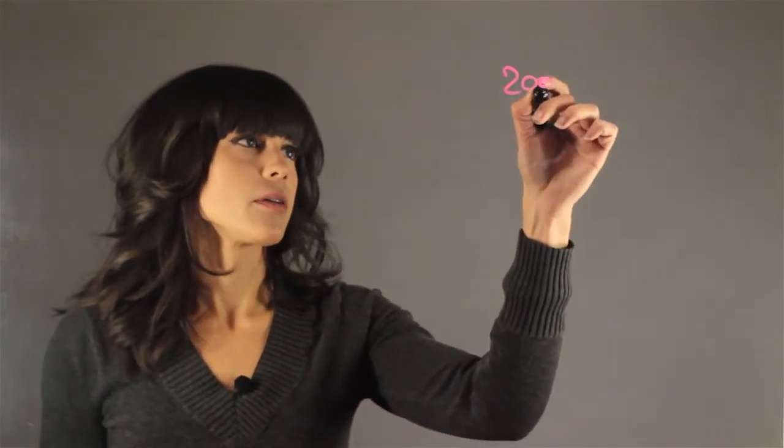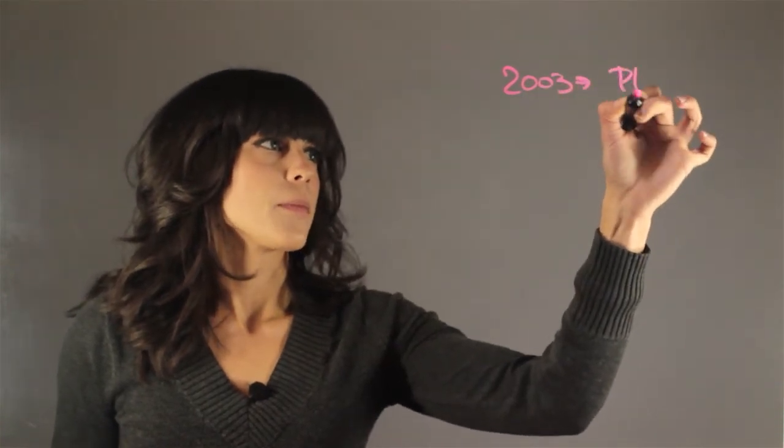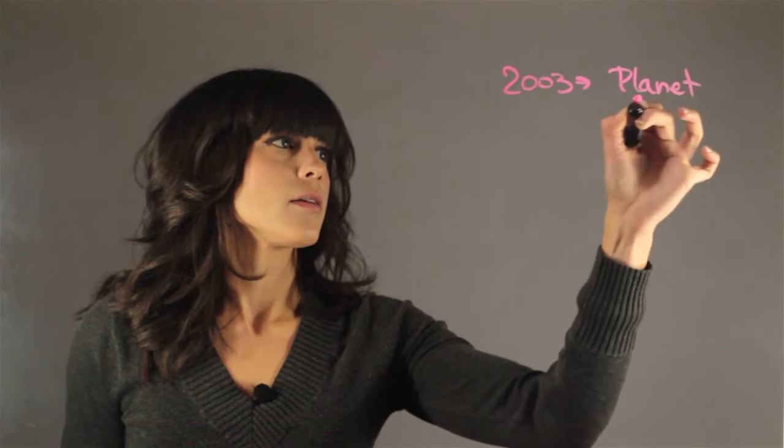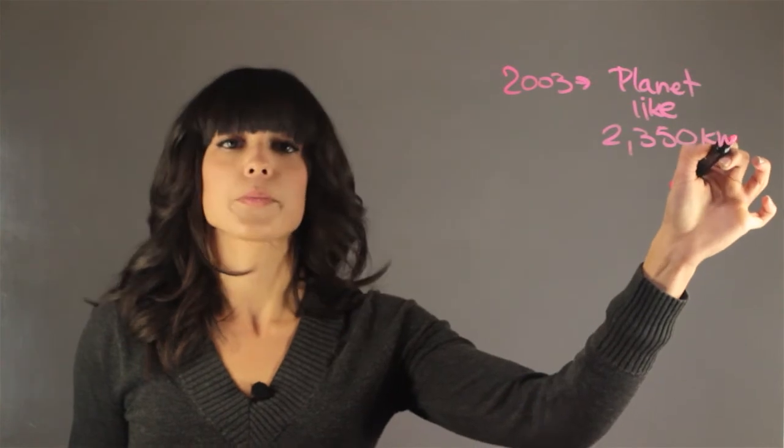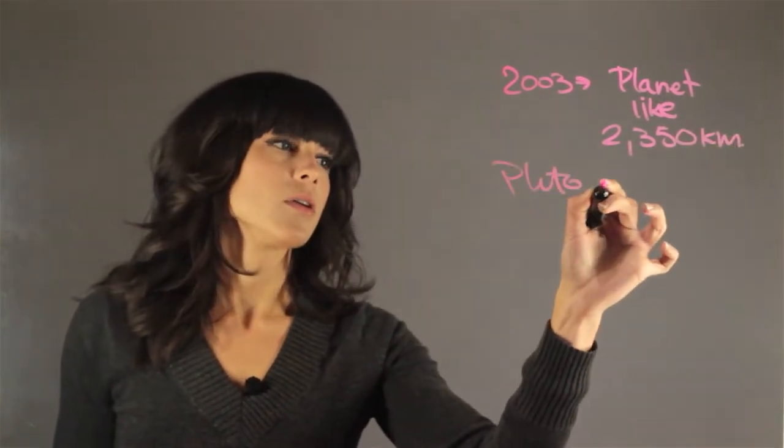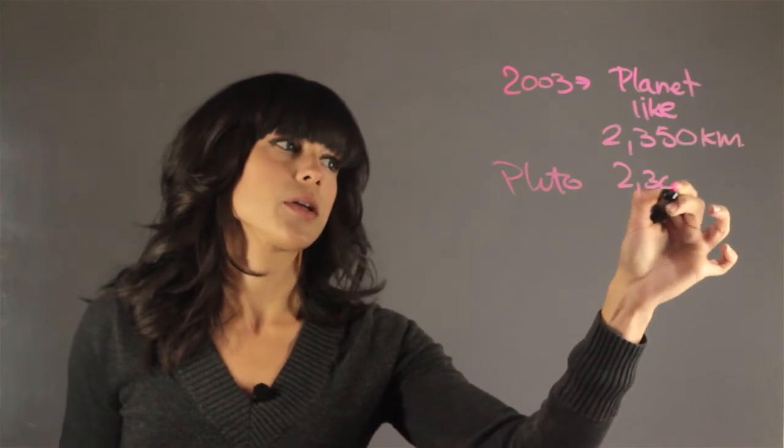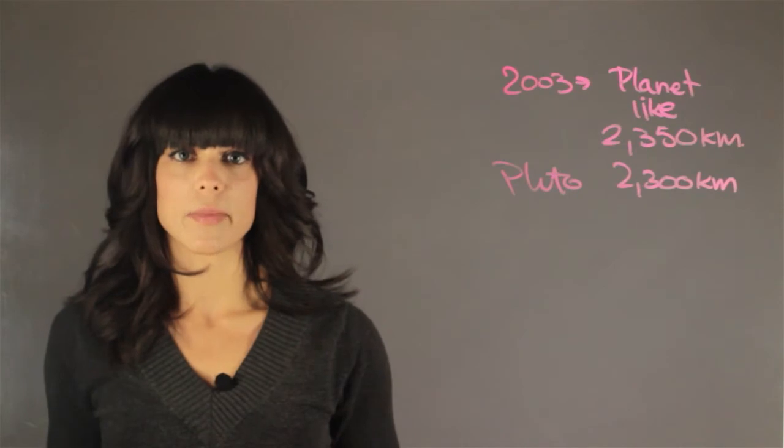So, in 2003, we got a planet-like object that was 2,356 kilometers in diameter. Pluto is actually only 2,300 kilometers in diameter. So, then we were going to have our tenth planet.